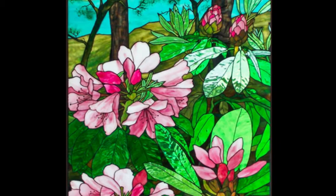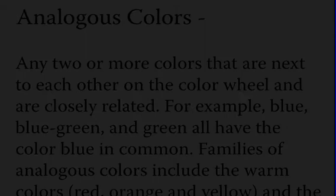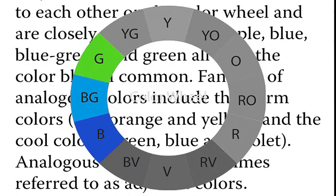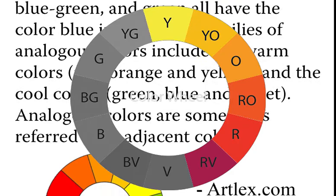Analogous colors are any two or more colors that are next to each other on the color wheel and are closely related. For example, blue, blue-green, and green all have the color blue in common. Families of analogous colors include the warm colors — red, orange, and yellow — and the cool colors — green, blue, and violet. Analogous colors are sometimes referred to as adjacent colors.